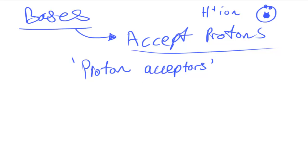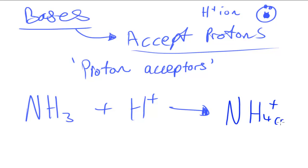An example of a base accepting a proton would be ammonia. Ammonia accepts protons, it acts as a base. So this, NH3, reacts with a proton and it forms an ammonium ion, which is represented by the symbol NH4+, which is aqueous, this is aqueous, and this is aqueous.